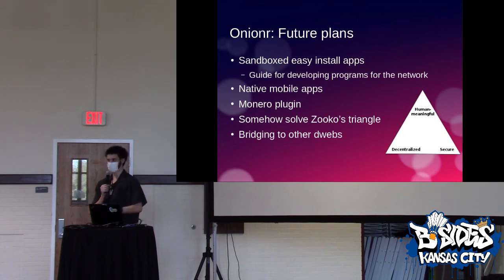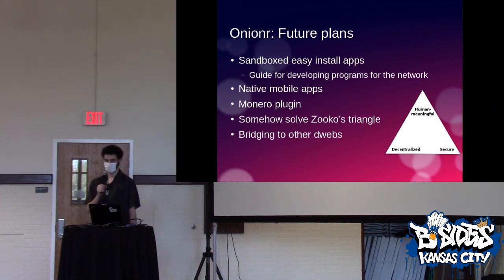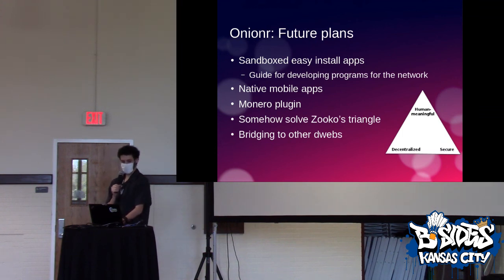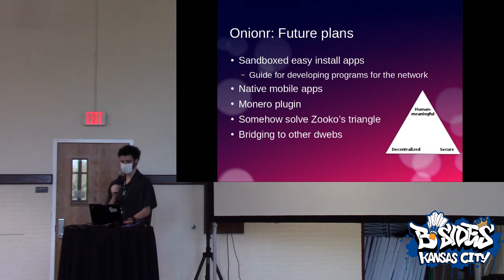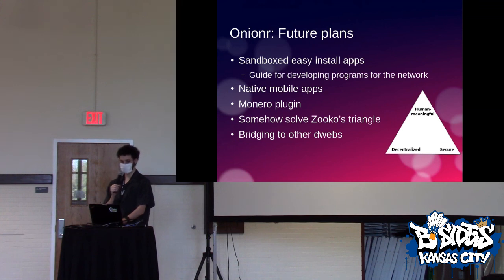My feature plans — this is a non-exhaustive list — include integrating with Monero, having some more native apps for mobile, having a way to install plugins in a sandboxed way so if someone publishes a little website or program you can easily install it and not be at too much risk. I also want to solve Zooko's triangle, which basically means you can't have a domain name that is human-meaningful, as well as decentralized and secure — the idea goes you can only have two. Some people have solved that, usually with blockchain, but it conflicts with some other goals, so we'll see.